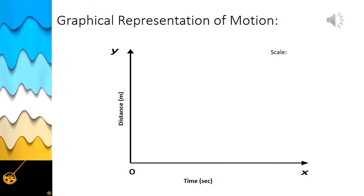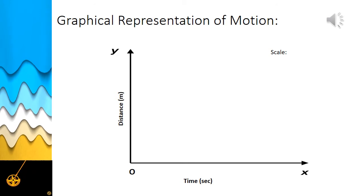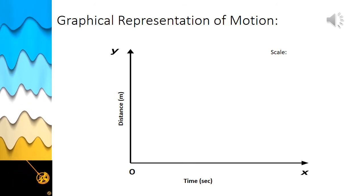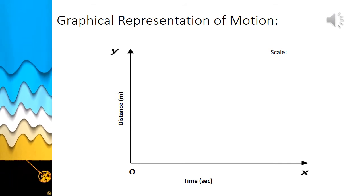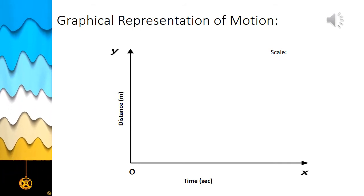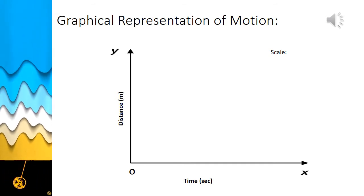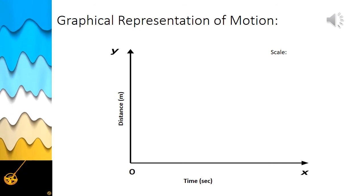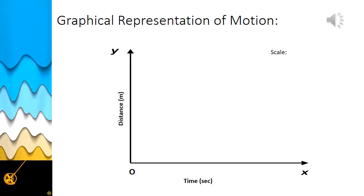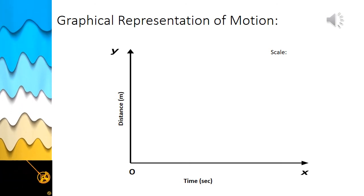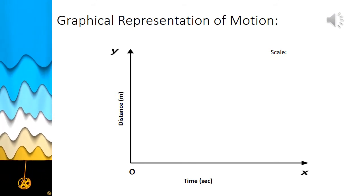The quantity which is made to vary at will is called the independent variable, and the quantity which varies as a result of this change is called the dependent variable. In this case, time is the independent quantity, so time is shown on the X axis. Label the X axis by writing 'time' and its unit in brackets, followed by an arrow.